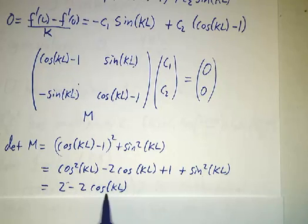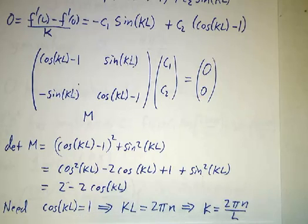There are values of k for which cos is 1. That happens whenever kL is a multiple of 2π. Which means that k has to be a multiple of 2π over L.